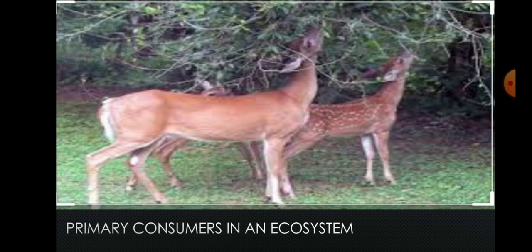The animals that depend on plants, that is producers, are called primary consumers. These primary consumers can also be called as herbivorous animals. Examples include elephant, squirrel, grasshopper, deer — all these are included under primary consumers.